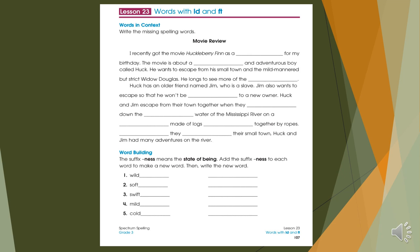Page 107. There are two exercises on that page. The first one is asking you to write the missing spelling words. You are using the words that you have on page 106 to fill these blanks.